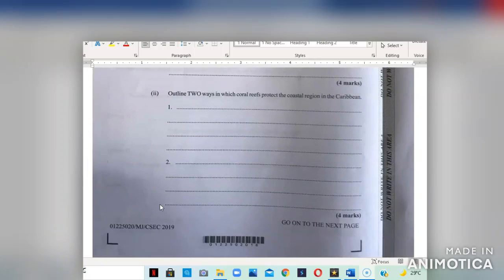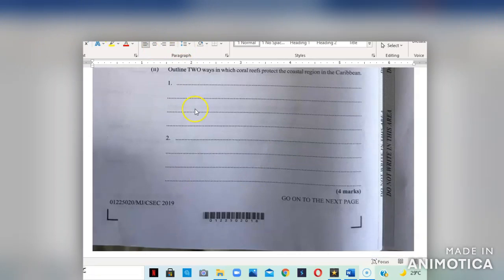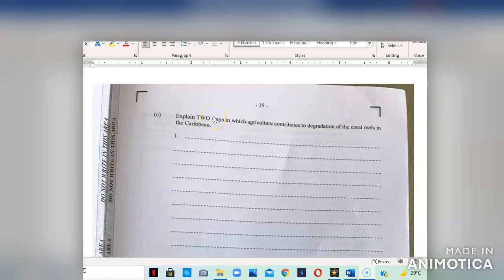Part 2 asks that we outline two ways in which coral reefs protect the coastal region in the Caribbean. Ways in which coral reefs protect the coastal region include: The coral reefs act as a buffer zone that protect the coast by absorbing violent wave impacts of ocean storms and hurricanes. So they act as a buffer zone which absorbs the strong currents and waves from tropical storms and hurricanes. Two, it helps to prevent the coastline from coastal erosion, flooding, and damages to shore properties. Once you're able to list any two with a little explanation, you should be able to get the four marks.